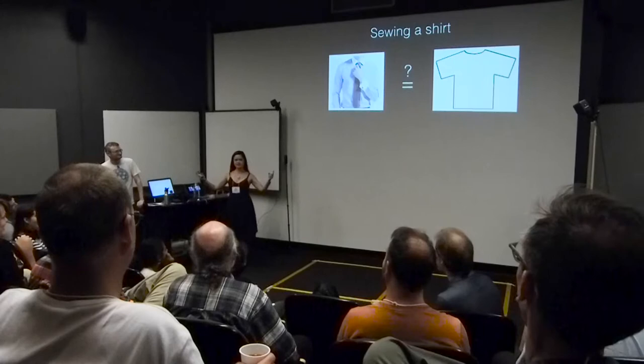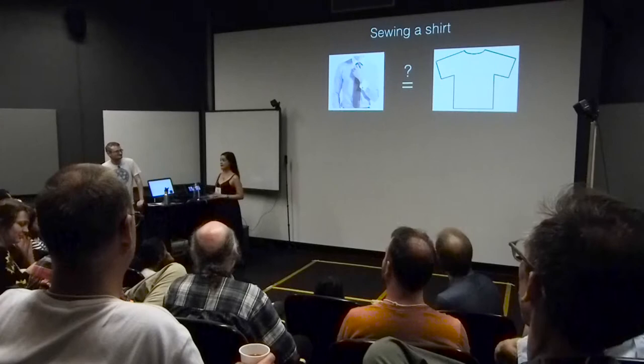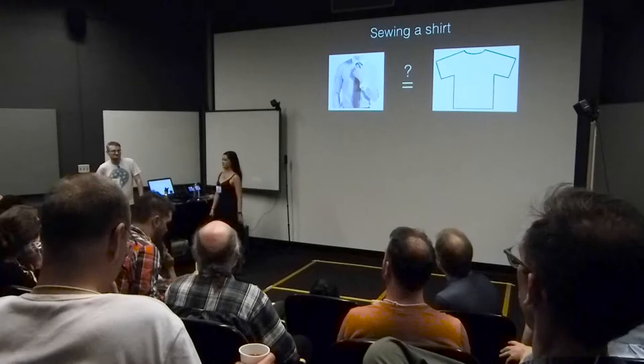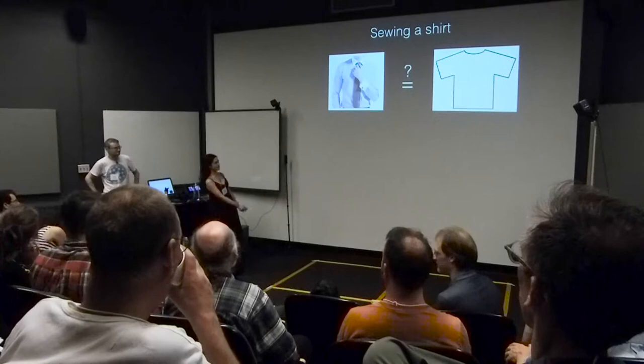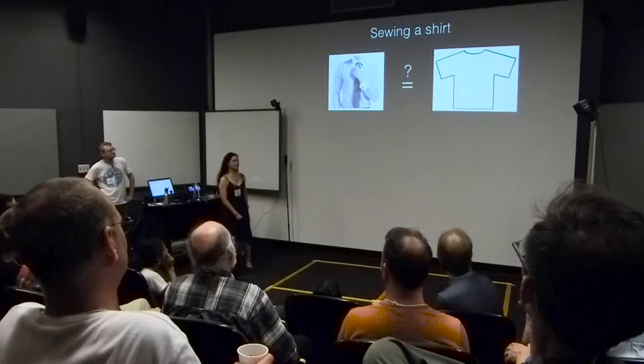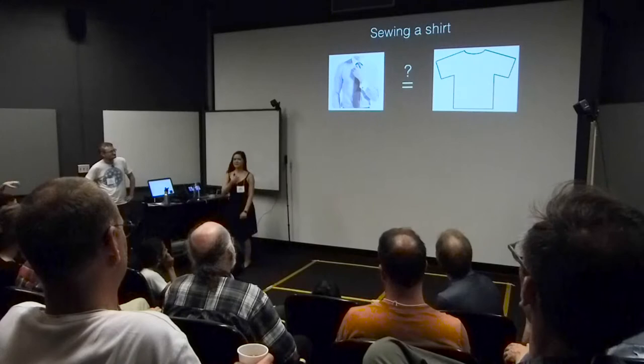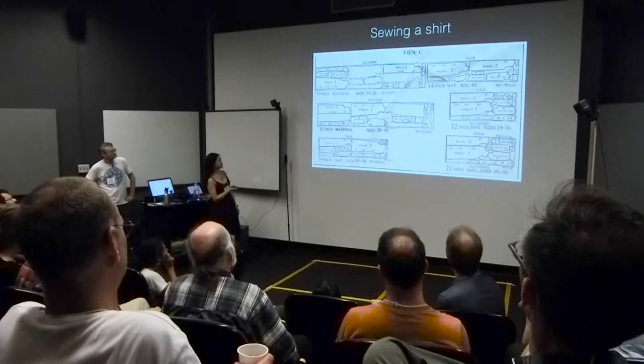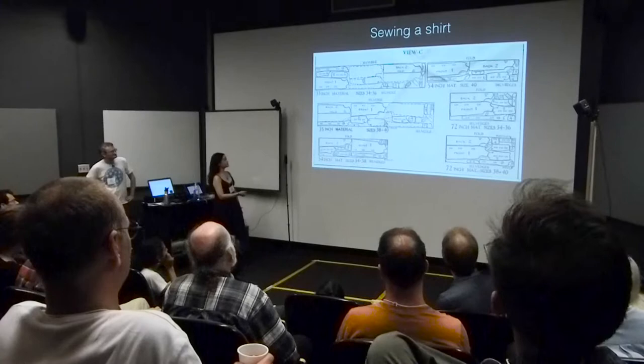Everyone here is wearing clothes. I'd like everyone to take a minute and think about the clothes you're wearing and think about the pattern pieces that make them up. This is a very short story. I see a lot of men wearing button-down shirts. You might think, oh, this is kind of simple — I just take two pieces of cloth, cut them in half, sew them together, and that's a shirt. Maybe cut it down the center, add some buttons, and I'm done. But it turns out that this is the actual pattern for a man's dress shirt.